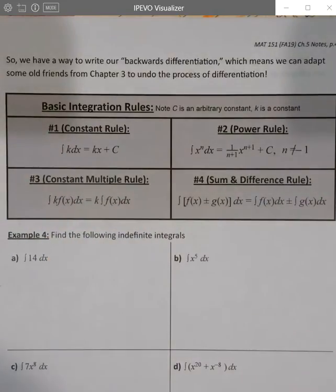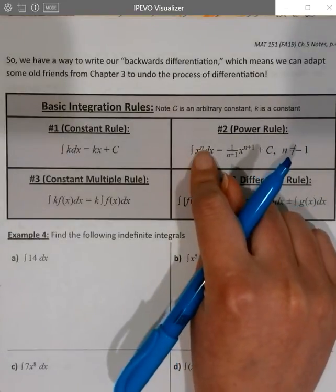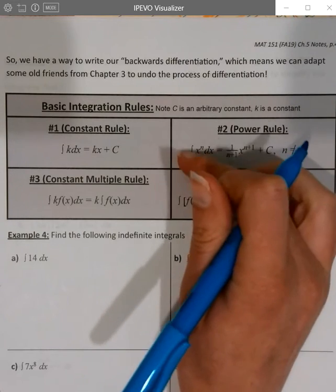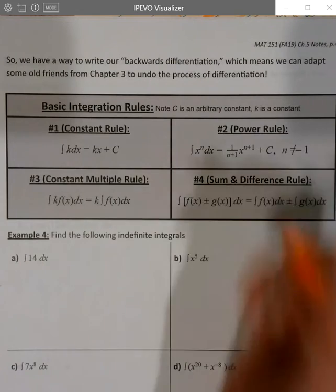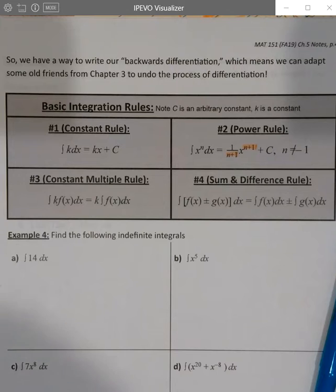Now the power rule, this one we talked about when we were looking at parts b and d on the previous page. The power rule for integrals is going to be similar but opposite of the power rule for derivatives. For derivatives, pull your power down and subtract one off, and so we have to do the opposite of that. We have to add one to the power and then divide by the new power. So it's opposite in both ways.